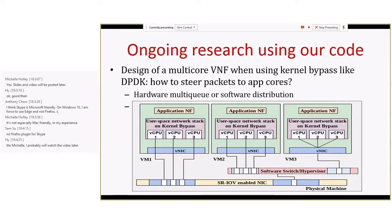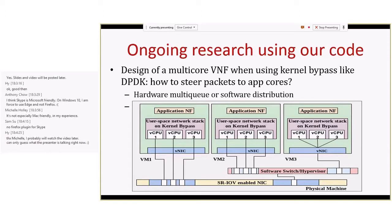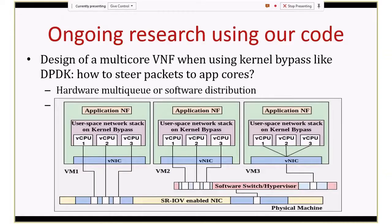We want to answer which design option works well for which type of VNF. For example, when building the MME functionality, one particular design option might be better, while for another function something else might be better. Another question we are answering is on what basis to steer packets to various cores. Traditional RSS in multi-queue NICs uses the TCP tuple to distribute packets. We are exploring whether you can use application-layer semantics—for example, steering packets based on the IMSI field, the unique user identifier, so that packets of different IMSIs are bound to different cores and you can avoid locking across data structures.